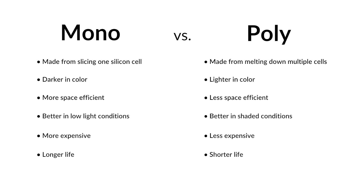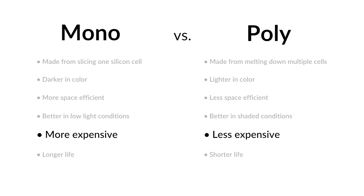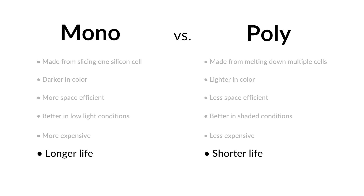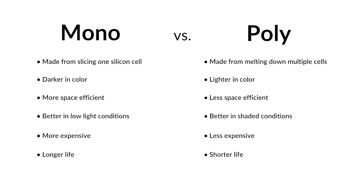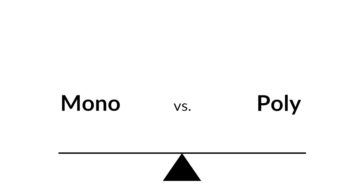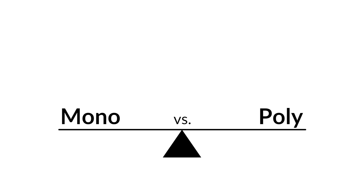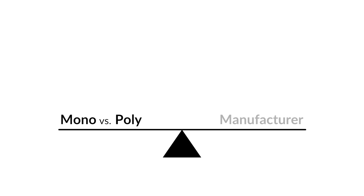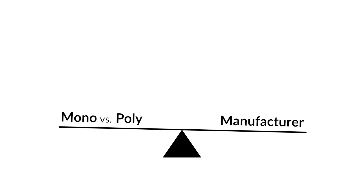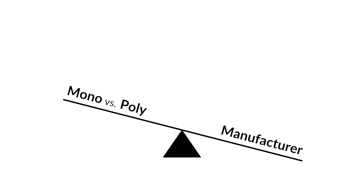Typically, a mono panel costs slightly more than a poly panel due to the manufacturing process. They are also expected to last longer. At the end of the day, deciding between a mono panel and a poly panel should not be your main consideration when looking at panels, as the manufacture of the product will ultimately dictate the quality.